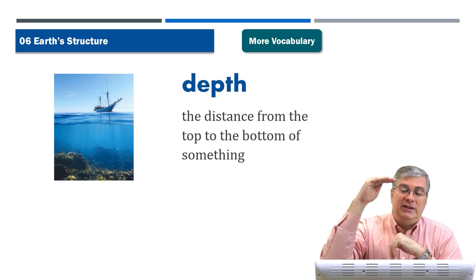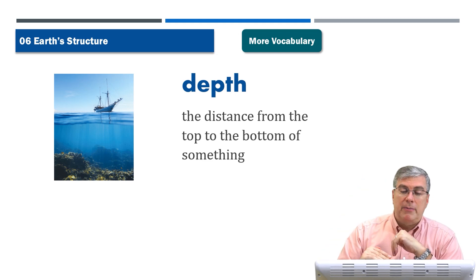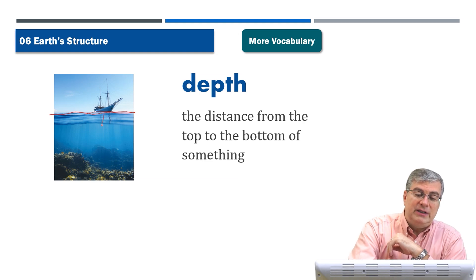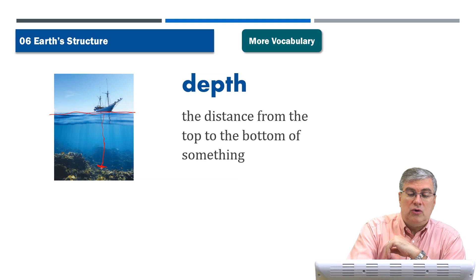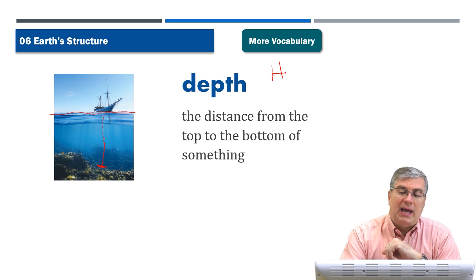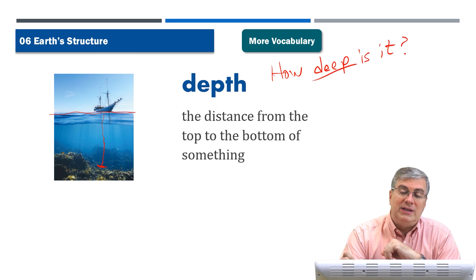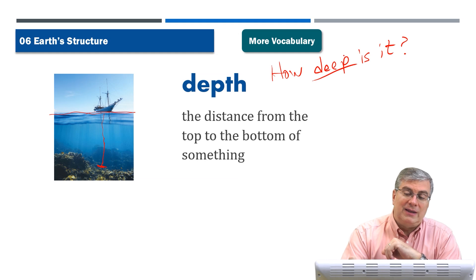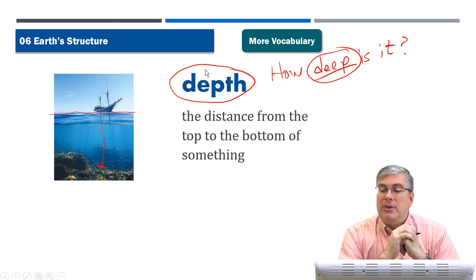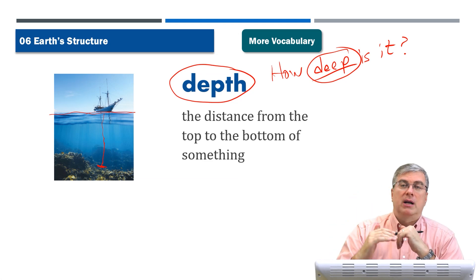Depth is the distance from the top to the bottom of something. Think about the surface of the ocean — that's the surface. What is the depth? That is the distance from the layer of water on the surface to the bottom of the ocean rock. How deep is that? We could also say, how deep is it? So 'deep' is an adjective and 'depth' is a noun — both refer to the distance from the top to the bottom of something.